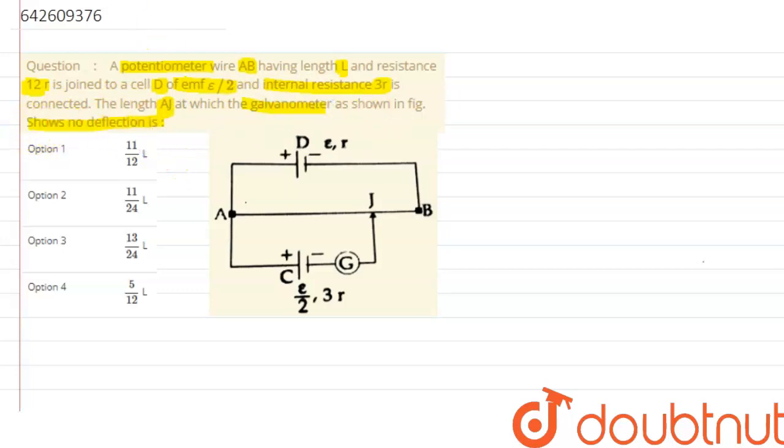The length AJ at which the galvanometer in the figure shows no deflection. So this is the basic case of a potentiometer in which we are interested in finding the length, that is the null point obtained at point J. Let's suppose it has to be x, or we can say it has to be the balancing length.